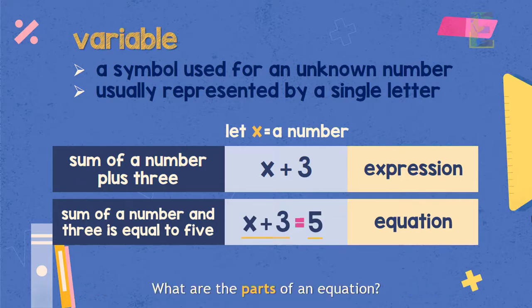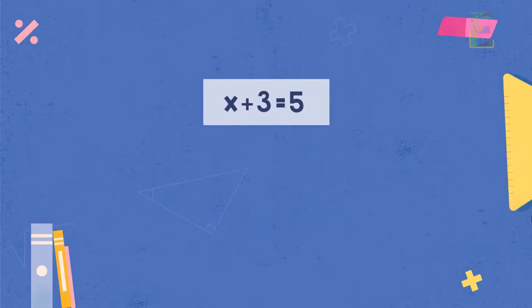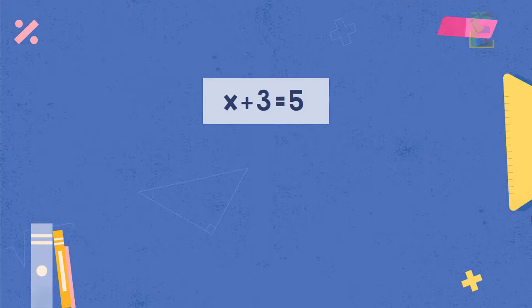So what are the parts of an equation? Let's use again our example x plus 3 equals to 5. This is what we call a variable. Meaning we need to find the value of this variable x. And these numbers 3 and 5 are called constants. And this is called operators.